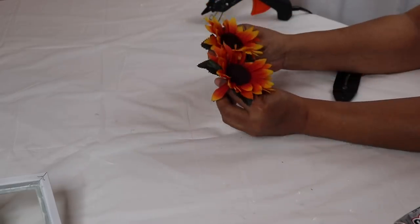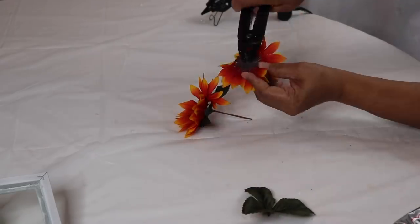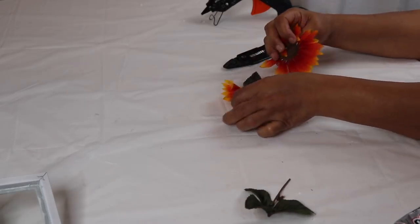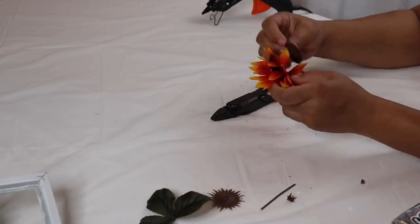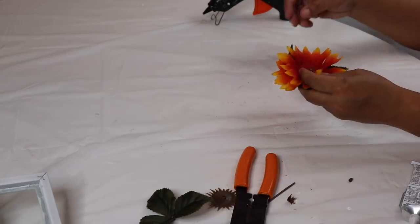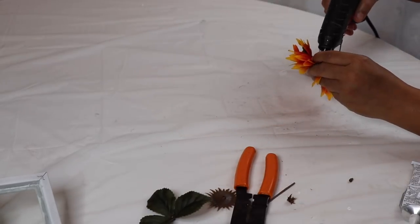Moving on to candle holder number two. Cut the stems off both flowers, remove the leaves from one flower, and then glue them together. I used E6000 along with hot glue to glue them together.